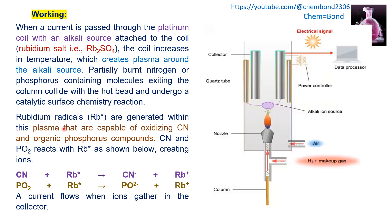What exactly happens near the surface of the bead when organonitrogen or organophosphorus compounds are decomposing is a complex and poorly understood phenomenon. Rubidium radicals are generated within the plasma that are capable of oxidizing carbon-nitrogen and carbon-phosphorus compounds. These rubidium radicals interact with carbon, nitrogen, and phosphorus compounds to produce negative charges and positive rubidium ions. These ions then move towards the collector electrode, producing a current that is amplified and recorded.